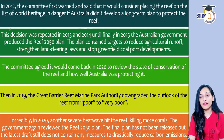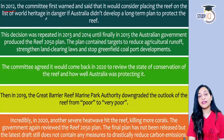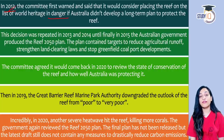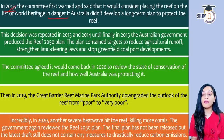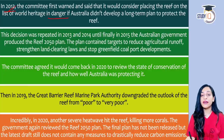Looking at the timeline: in 2012, the UNESCO committee warned Australia that the Great Barrier Reef world heritage site had no long-term protection plan. This decision was repeated in 2013 and 2014. Finally, in 2015, the Australian government responded by adopting the Reef 2050 Plan.